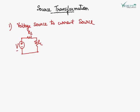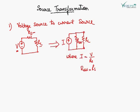Suppose there is a circuit like this: a voltage source with its internal resistance Rs and a load resistance Rl. We can convert this circuit into a current source equivalent. The magnitude of this current is given by V divided by Rs, and the shunt resistance Rsh is equal to the series resistance Rs in the original circuit.